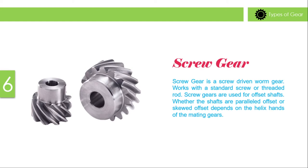Screw gear: A screw gear is a screw-driving gear that works with a standard screw or threaded rod. Screw gears are used for offset shafts, and whether the shafts are parallel offset or screwed offset depends on the helix hands of the mating gears.